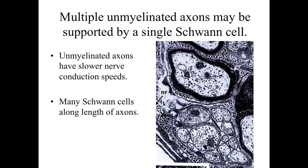In addition to myelinated axons, we can also have unmyelinated axons. With an unmyelinated axon, you have a Schwann cell that just surrounds and supports a cluster of axons. On the electron micrograph to the right, you can see the Schwann cell sitting there — a myelinated axon towards the top — but at the bottom there's a structure where you've got probably six to ten unmyelinated axons, all surrounded and supported by a single Schwann cell. Keep in mind that one Schwann cell, even though it's supporting multiple axons, is only involved with a short segment along each of those axons. We'll have many Schwann cells along the axons, whether myelinated or unmyelinated.